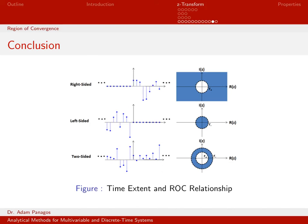For a left-sided signal, the region of convergence is always inside some circle R minus. For a two-sided signal, infinitely long in both positive and negative time, the region of convergence looks like an annulus or a disk — the points in the Z-plane that are greater than R plus and less than R minus.